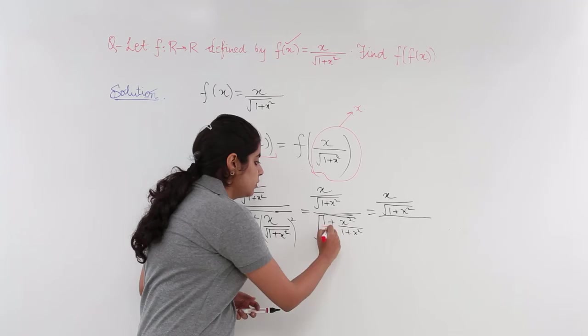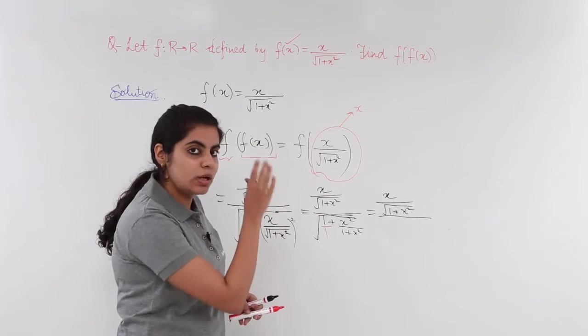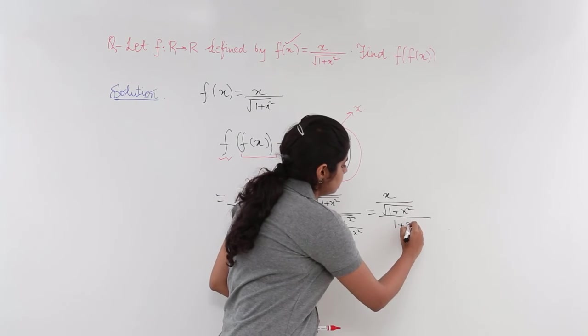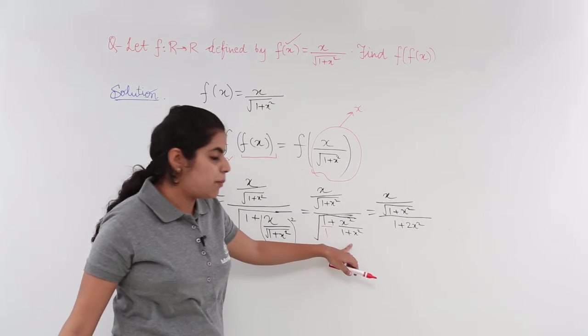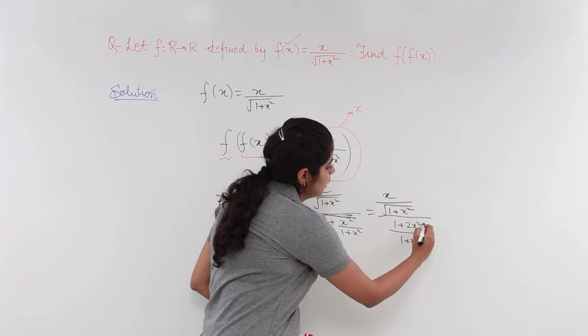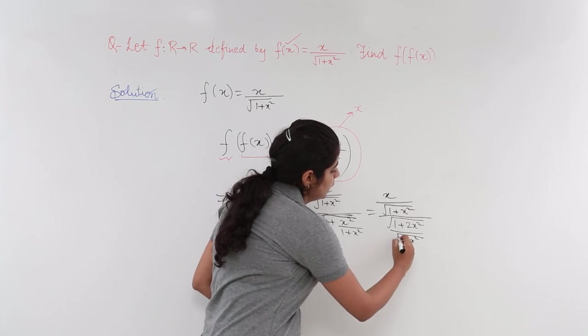it should be 1 here. 1 plus x square goes up. It becomes 1 plus 2x square upon 1 plus x square with the root over separated on both the terms.